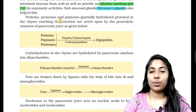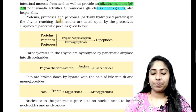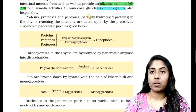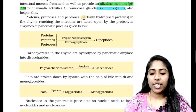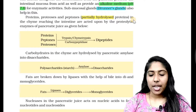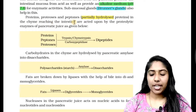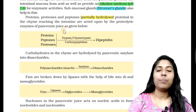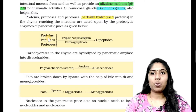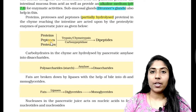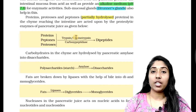First, it's proteins, proteases, and peptons. Peptons are partially hydrolyzed proteins. That is the protein hydrolyzed form. In the chyme reaching the intestine, they are acted upon by the proteolytic enzymes of the pancreatic juices given below. That is the proteins and peptons and proteases in our intestine — it is the pancreatic juice.